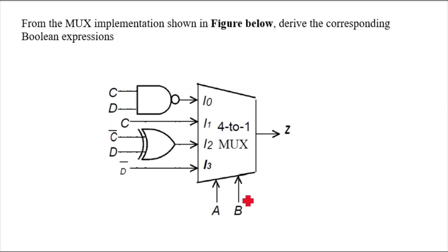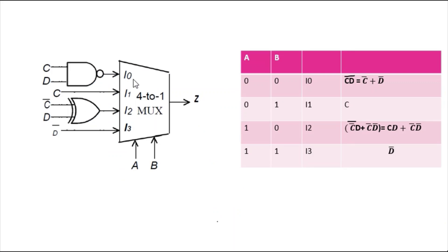The select lines are A and B. I'm assuming you already know how to do MUX questions. Let's start solving this one. We need to find the function for I0, I1, I2, and I3, because some gates are provided at the inputs of the MUX. Let's find the function for I0 first — this approach will be easier.